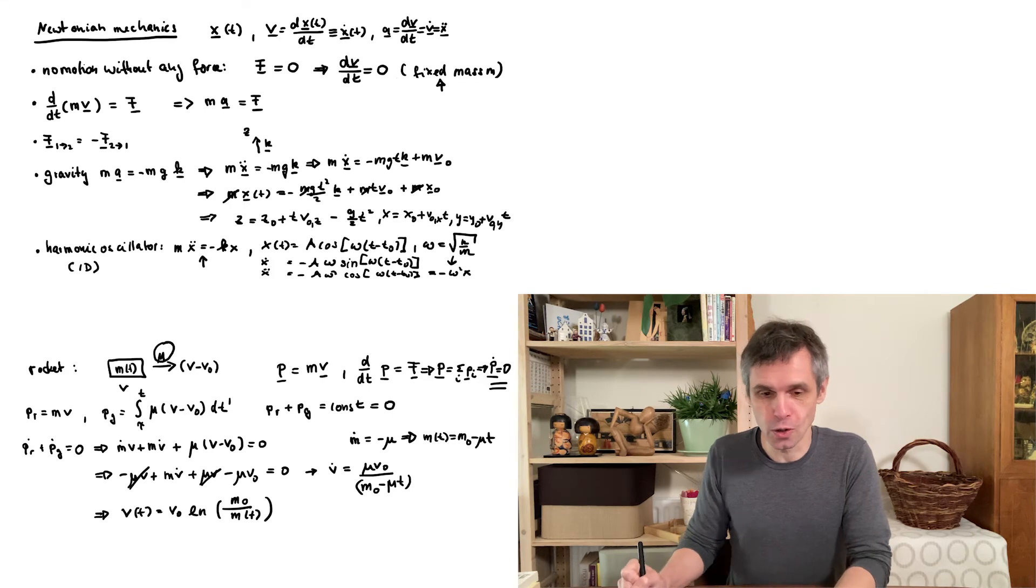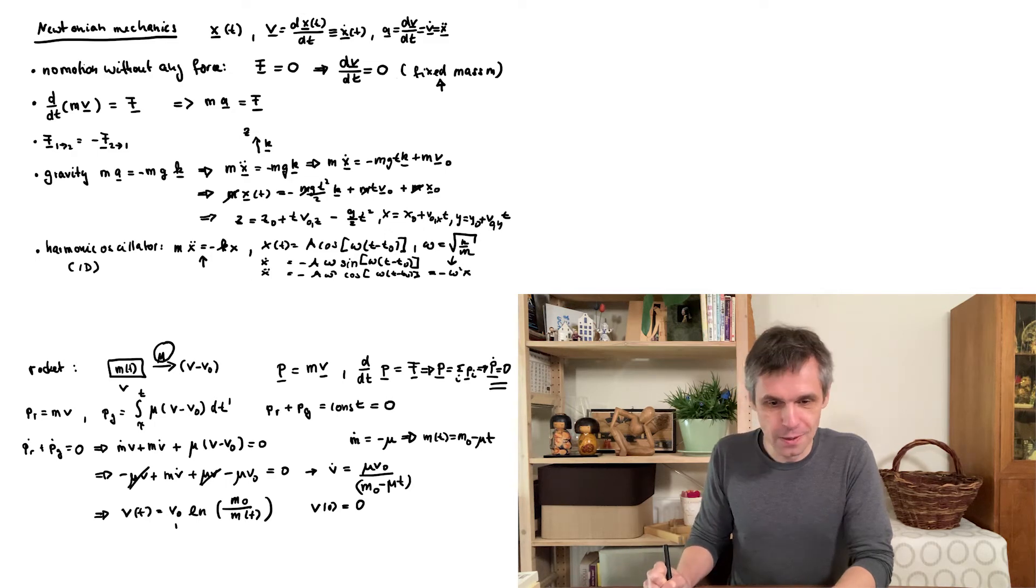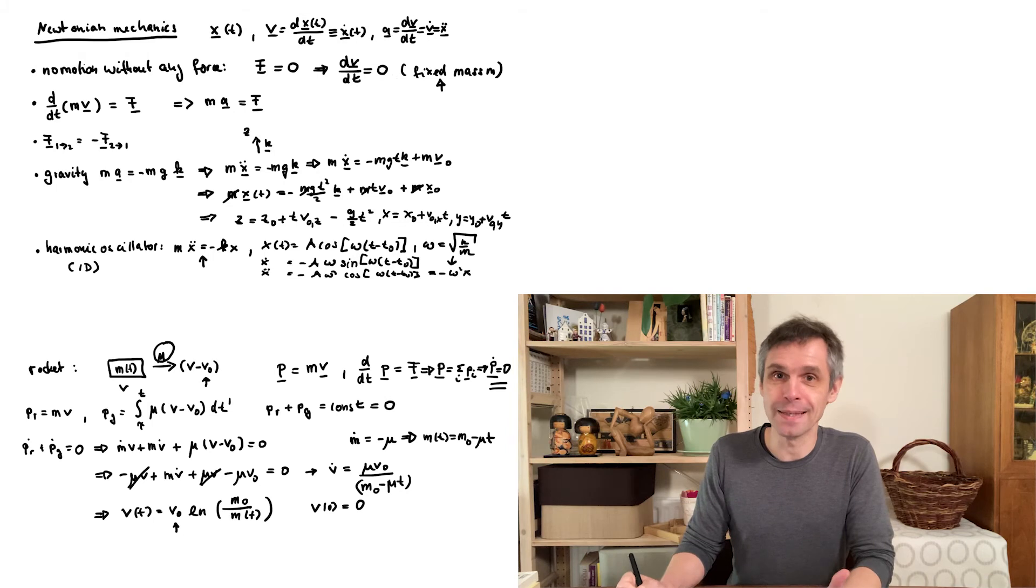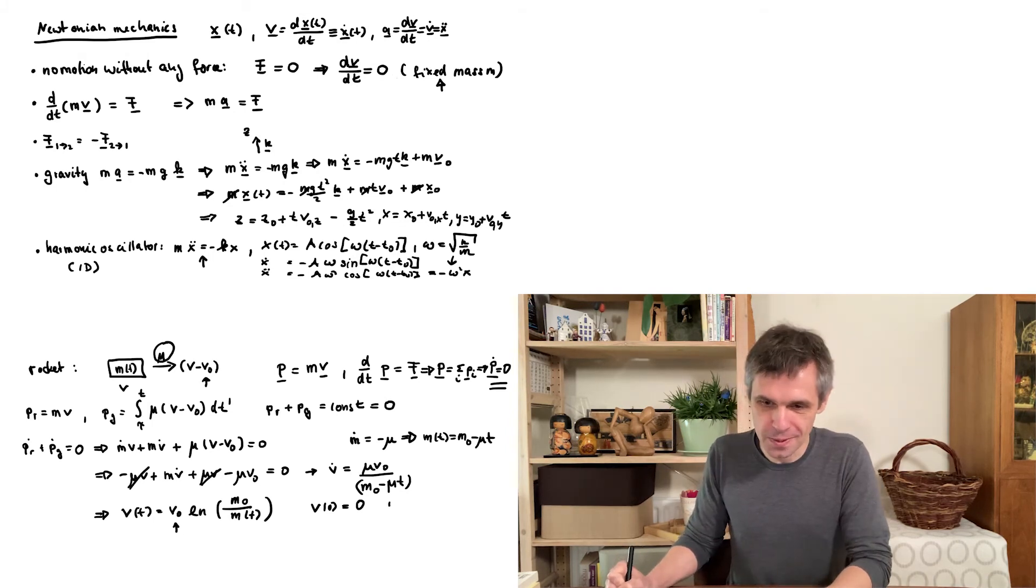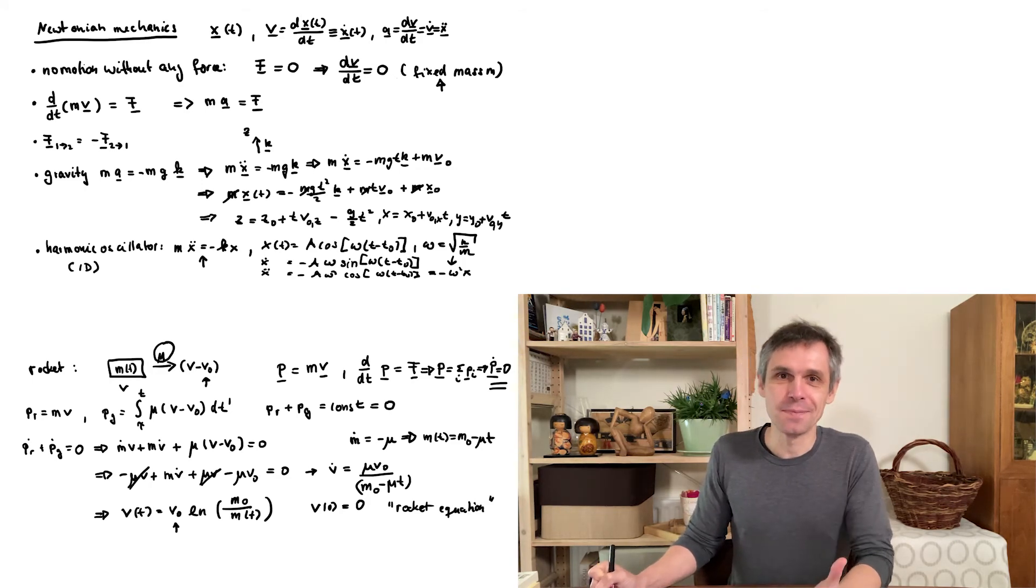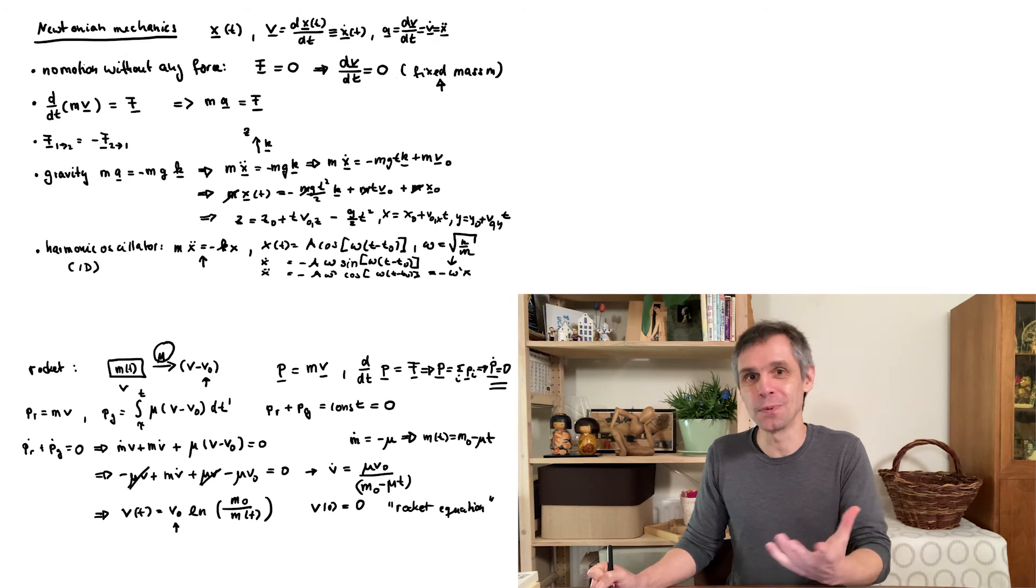And finally we can integrate all of this and this just gives us a logarithm. We use the initial conditions already so at time zero the velocity is really zero. v naught is not the initial velocity but the velocity by which the gas is being expelled. So this is known as the rocket equation. And this is now just one example that illustrates how complicated Newtonian mechanics can be because it insists to work with these positions and velocities and accelerations.